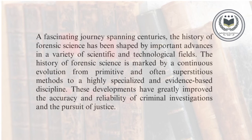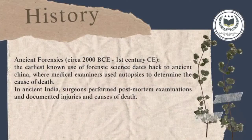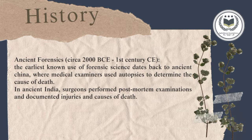Forensic science has a great Indian history background as well as history abroad. There are many divisions of history in which forensic science is divided. Ancient forensics lies between 2000 BCE till the first century CE, and it is also known as the earliest forensic science used in ancient China, where medical examiners used autopsies to determine the cause of death. Then slowly comes the medieval Europe period.